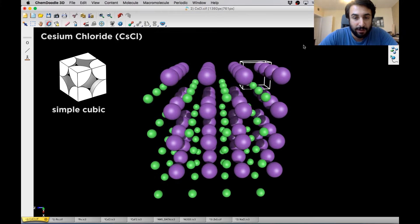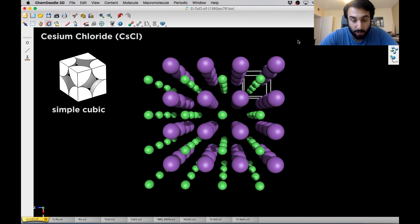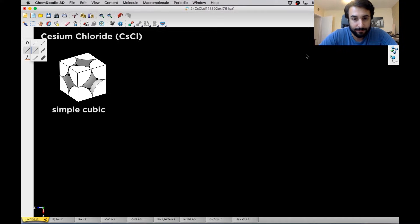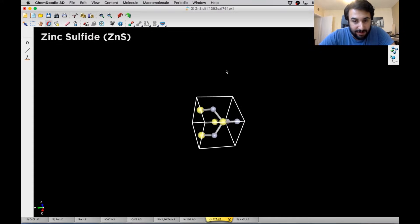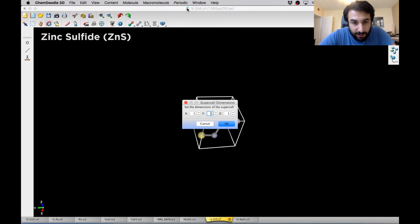But this changes a little bit when the sizes of the ions become quite disparate. So let's take a look at another one. Okay, we're now looking at zinc sulfide. So the zinc ions are here in gray and the sulfide ions are in yellow. And so let's build this out just a little bit so we can get a better sense of this unit cell.